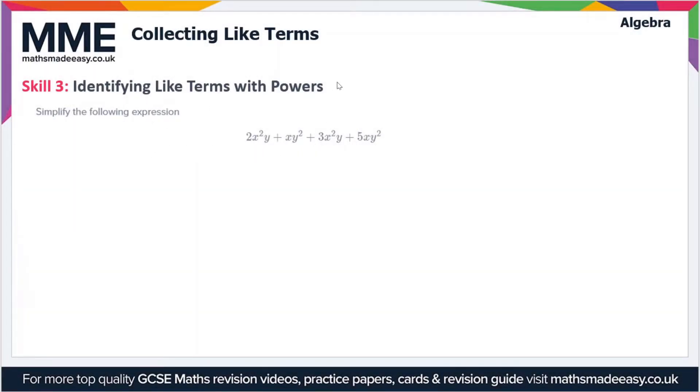This time we're identifying like terms where we have powers in our variables. So we have to simplify this expression: we have 2x squared y plus xy squared plus 3x squared y plus 5xy squared.